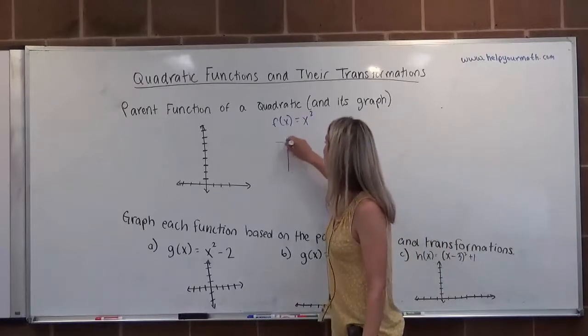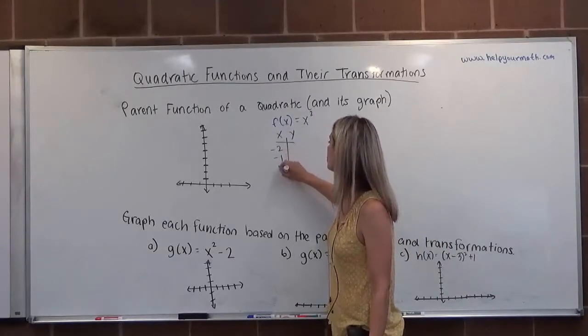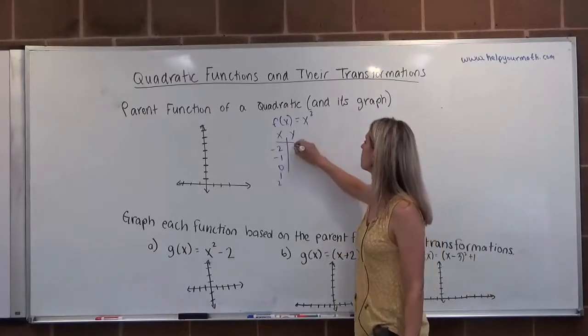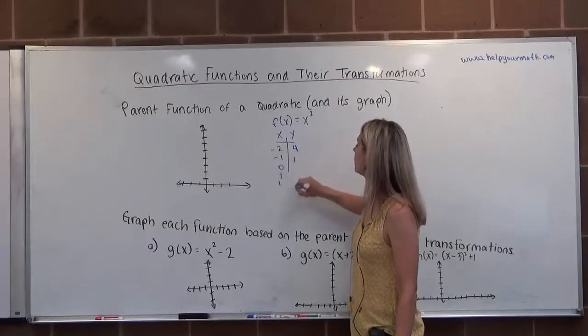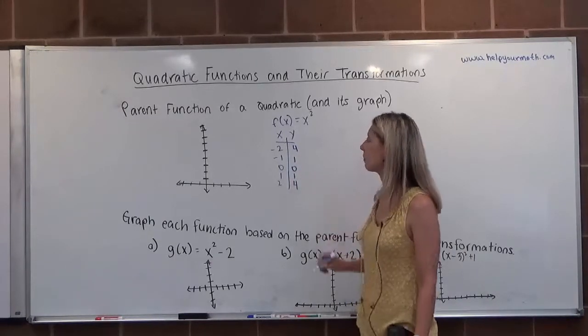It's helpful usually to make a table of values so we can go ahead and do that. When in doubt, use two negatives, two positives and zero. Negative two squared would be four. One squared is one. Zero squared is zero. One squared is one. Two squared is four.